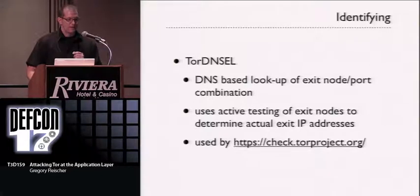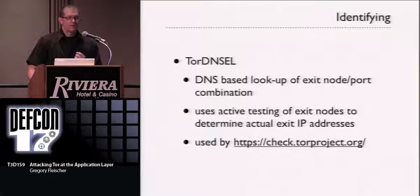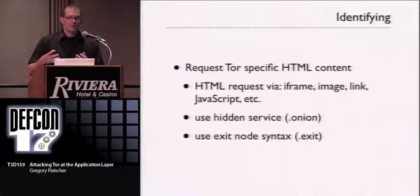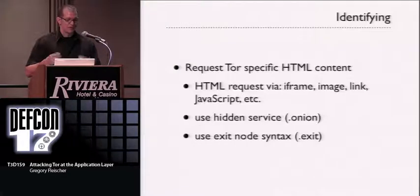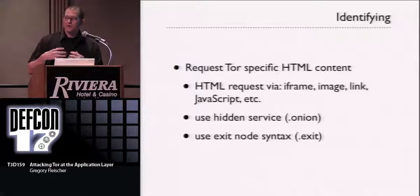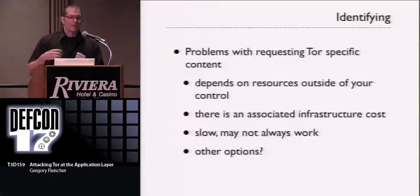There is a project called Tor DNS EL, an active testing exit list tool that actively tests to determine the real exit node IP addresses being used to send out traffic. The Tor browser bundle uses this at check.torproject.org. At a higher application layer, we can request specific content through HTML iframes, images, or links using special syntaxes Tor supports internally: .onion for hidden services, and fingerprint.exit to route through a specific exit node. If a user is not using Tor, they won't be able to retrieve those resources — testable via onload events on image tags and iframes.